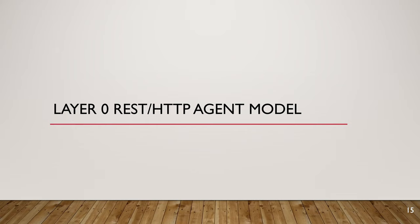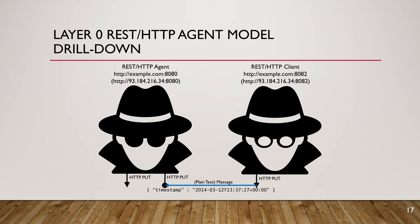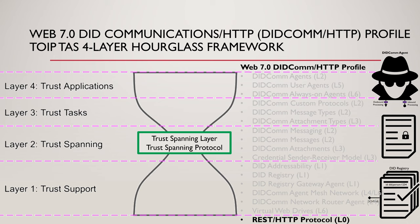Starting with layer zero — the REST over HTTP agent model. Here we're talking about a sender, either an agent or a client, wanting to send a plain text message to a receiving agent. Very simple, minimum requirements. Looking at the framework, we only require REST over HTTP protocol support at the bottom, one of the foundational elements.